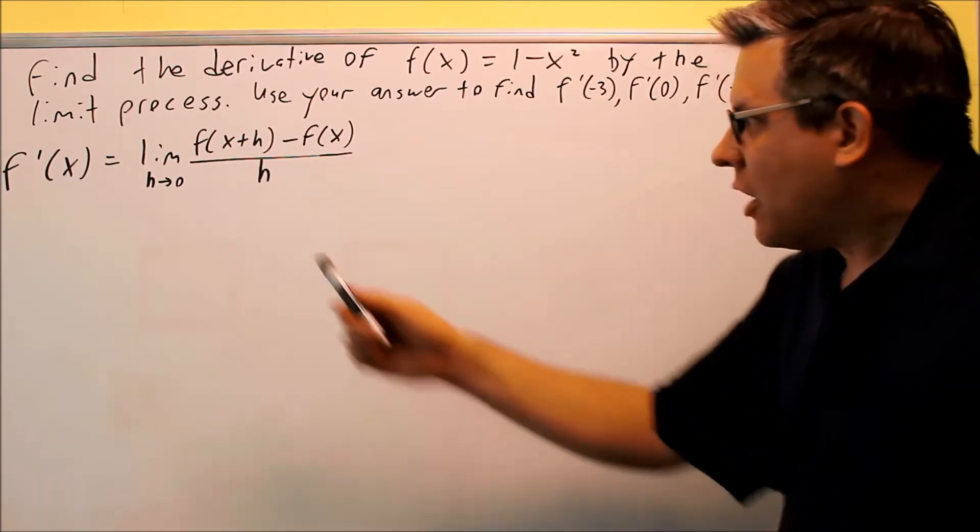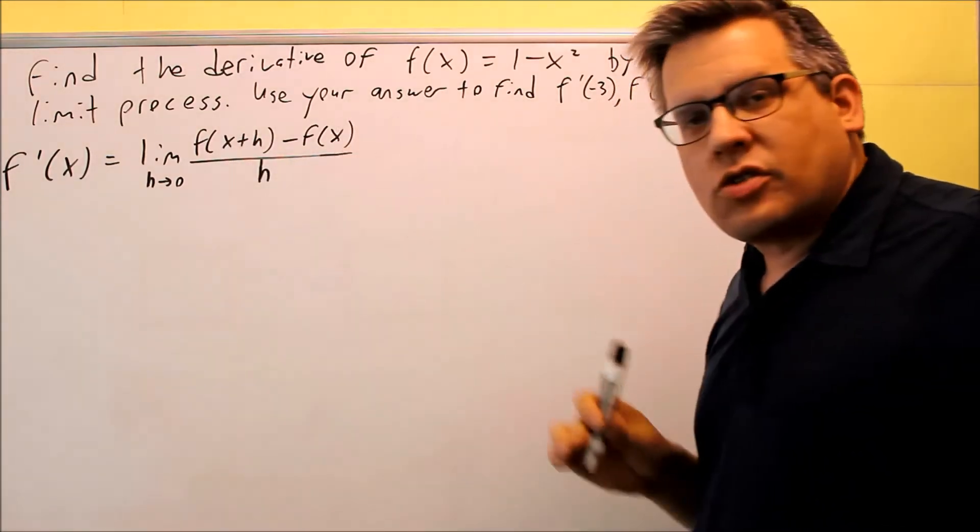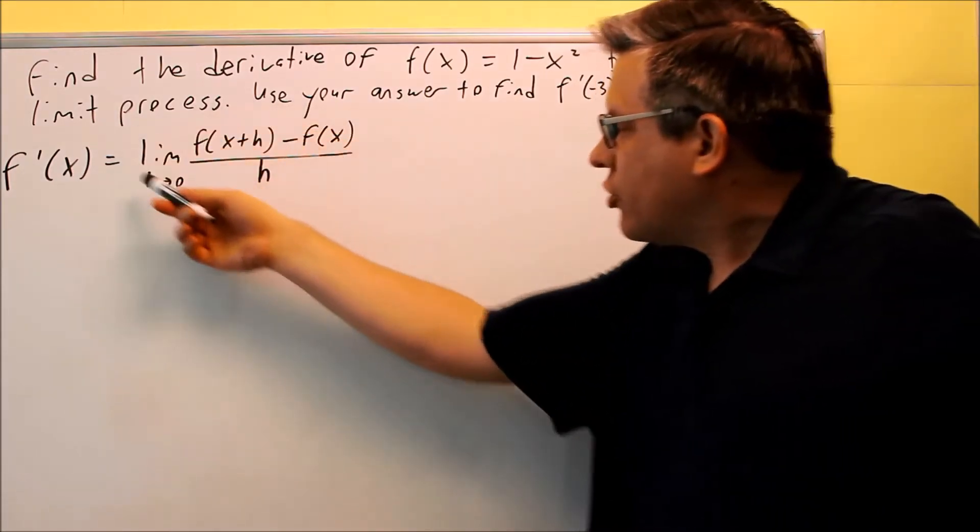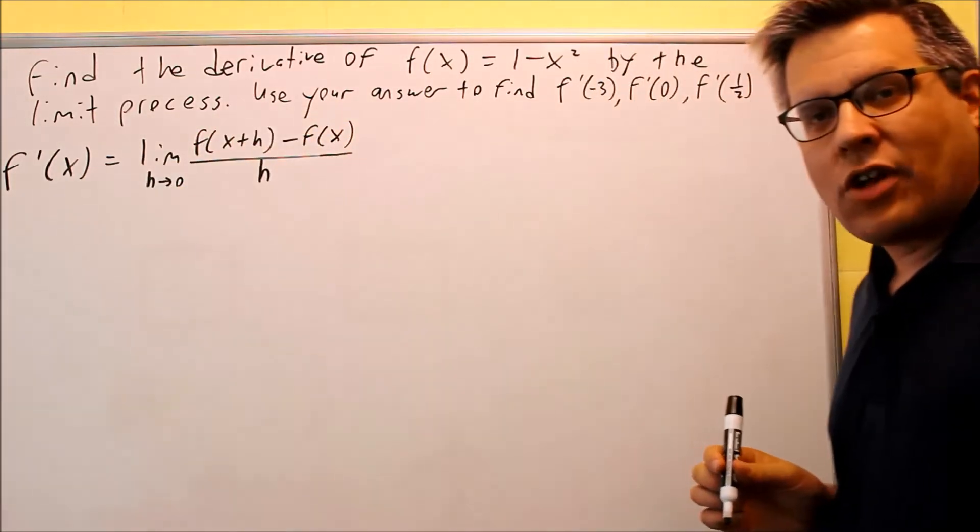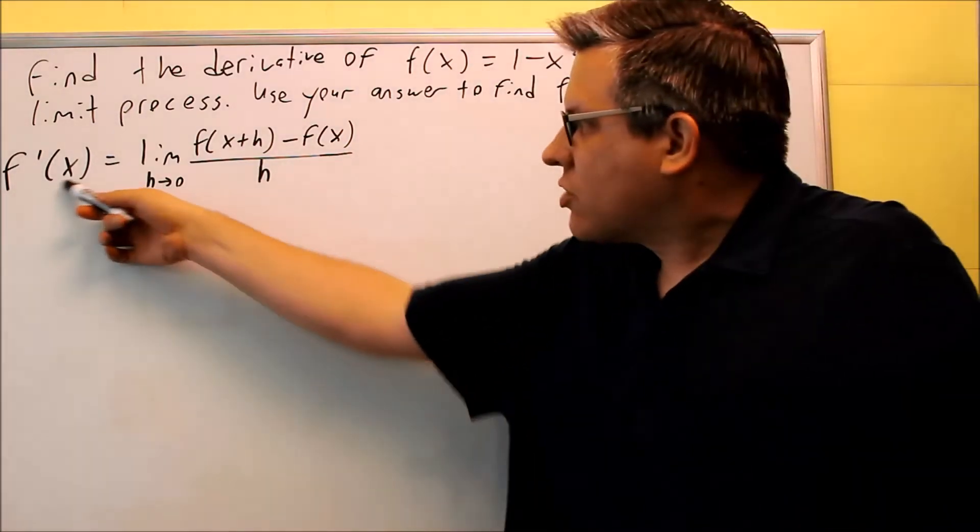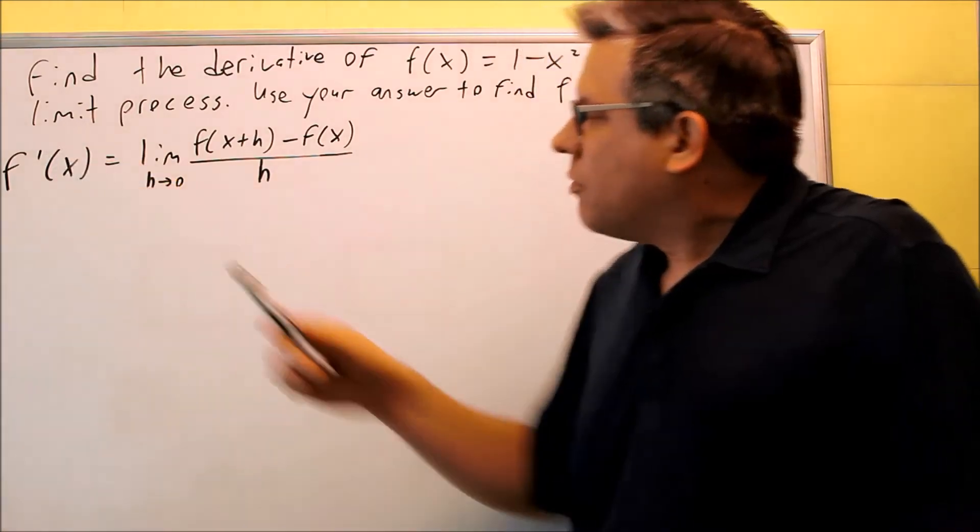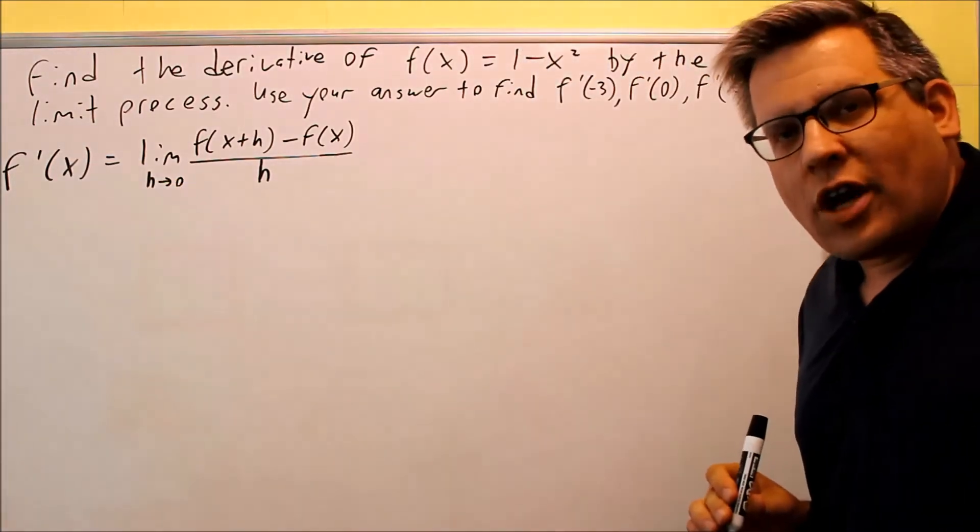In the previous section, we had the formula with x sub-zeros in each of those. We're not going to do that in this case. Instead, we're going to do it in the general case, so our answer is going to have an x in it. Notice the notation that we're using here for a derivative.